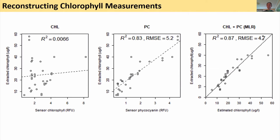The reason for this discrepancy is that cyanobacteria contain chlorophyll in a different photosystem than eukaryotic algae, and that photosystem fluoresces much more poorly. So while extracted chlorophyll is an excellent proxy for cyanobacteria, the in-situ chlorophyll sensor requires additional work to get there.